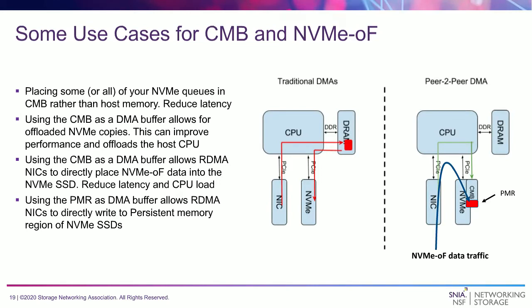Looking at the CMB: placing NVMe queues in the CMB rather than in host memory reduces latency. RDMA NICs can push data directly to the NVMe CMB's PCIe address space, and this could work as a write-back cache, offloading the CPU main memory and reducing NVMe over Fabrics latencies. If that area is persistent and used as a temporary buffer, PMR can provide remote access to byte-addressable persistent data using RDMA verbs. This reduces latencies and CPU offload. I'll hand it over to Phil.